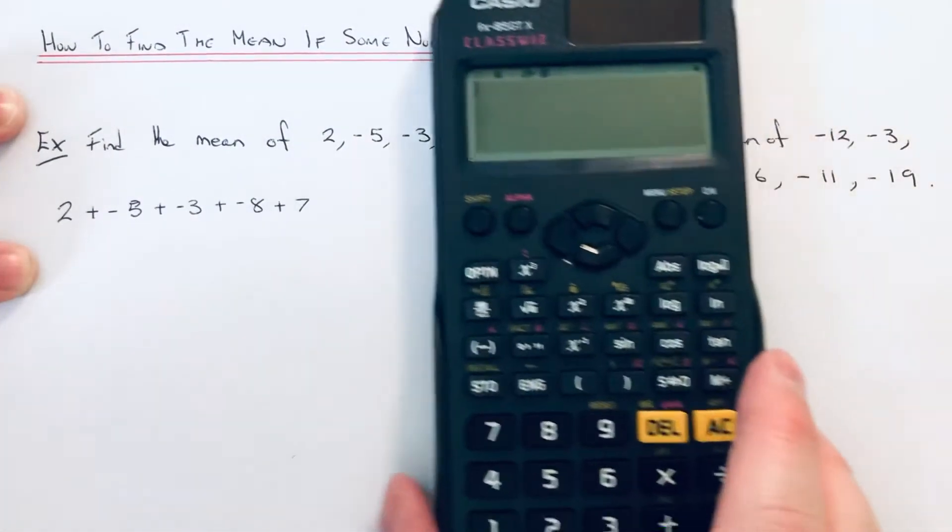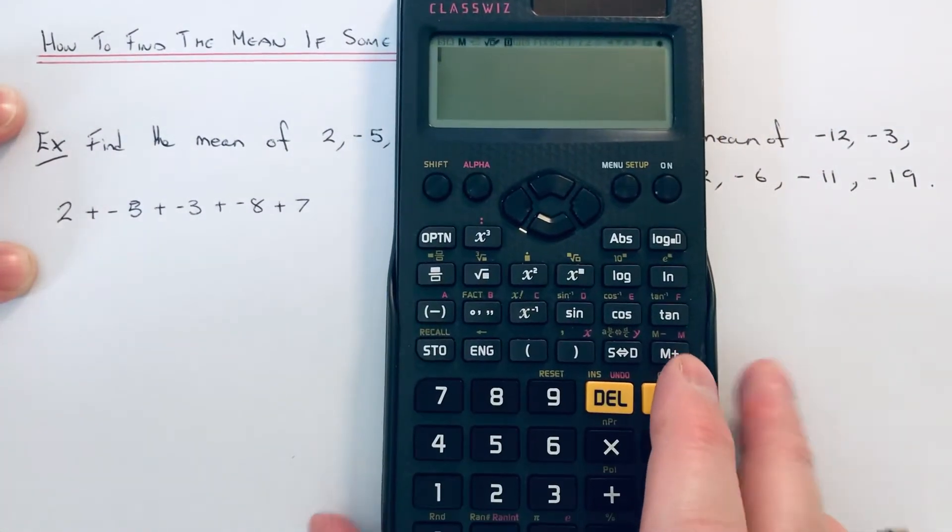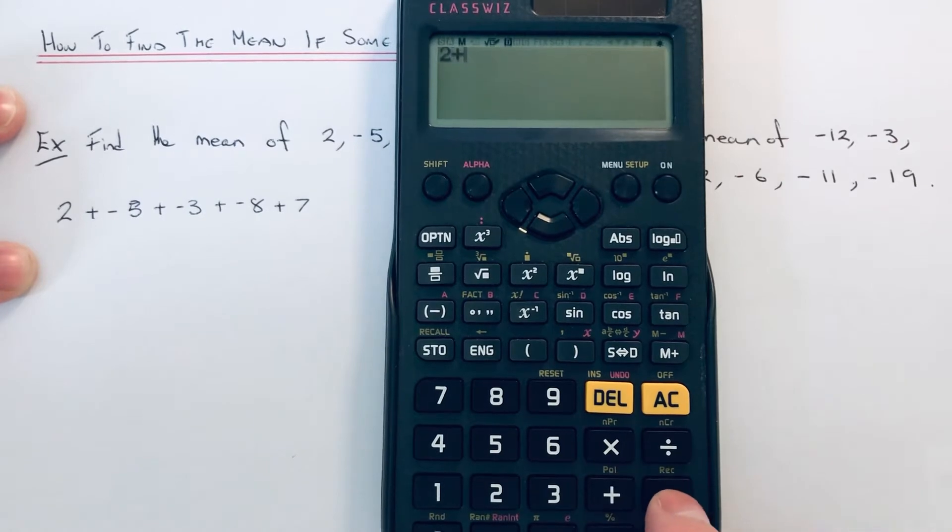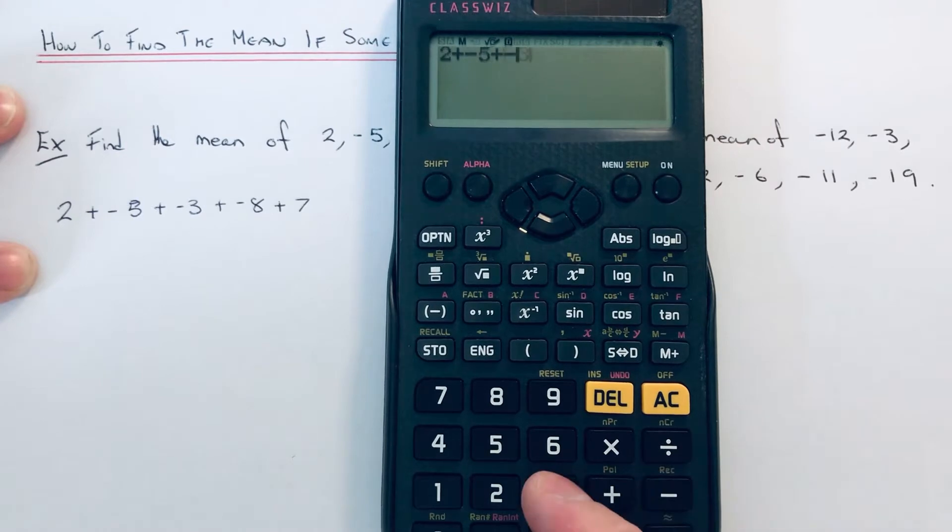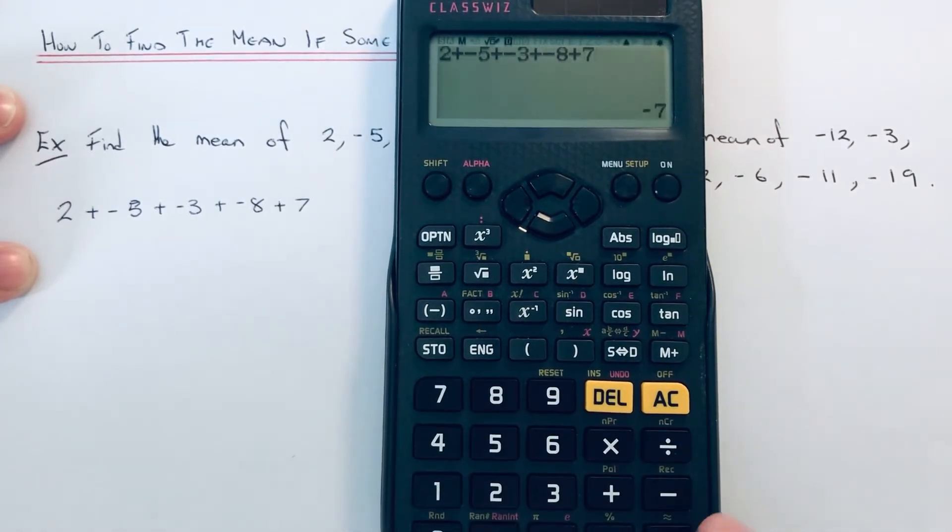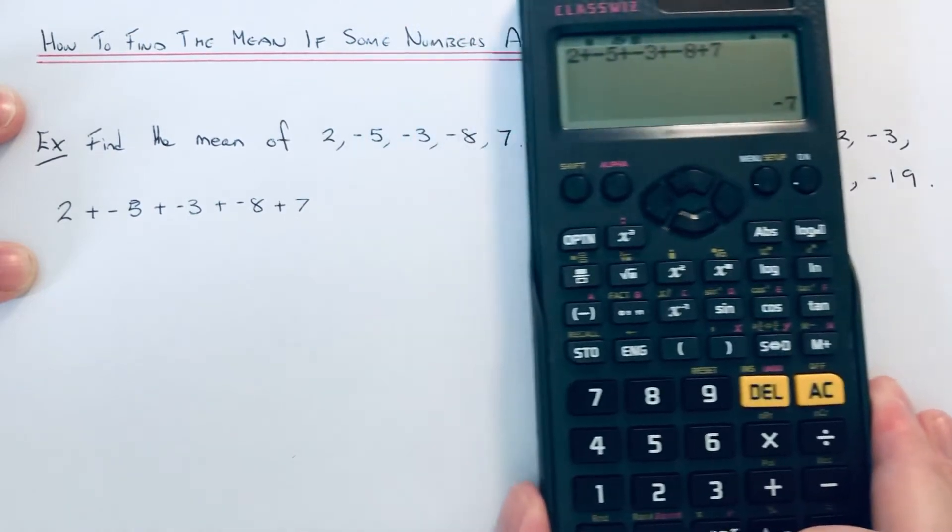You can just type that in on your calculator as it is. So it's 2, add, it's probably best to use the take away key for the minus, add minus 3, add minus 8, add 7. So we get a total of minus 7.